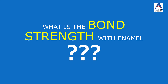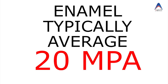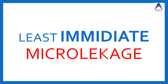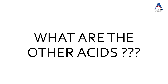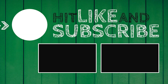The bond strength achievable immediately after etchant application and proper bonding protocol is around 20 MPa. Because of this close contact and good bond strength, composite is said to have the least microleakage at the time of initial bonding. Research is still ongoing, and many textbooks mention the use of malic acid, citric acid, lasers, and air abrasion, which are found to give better limited etching of the enamel.